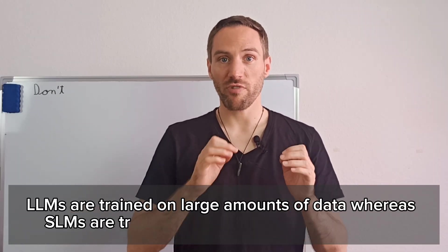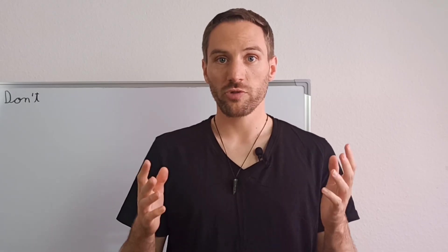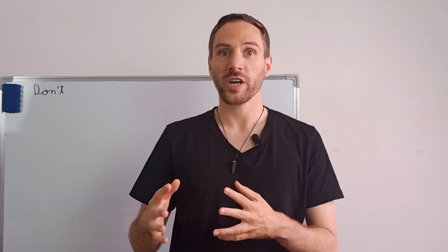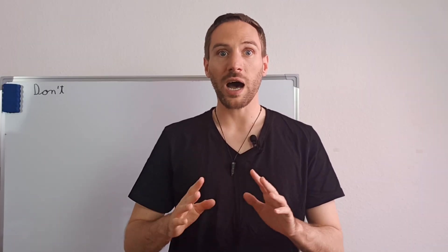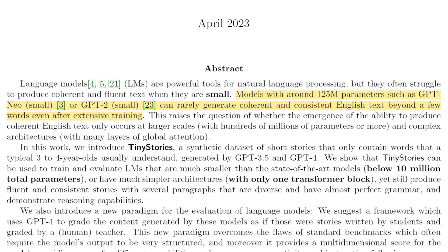SLMs are instead trained on very specific high-quality datasets. One approach Microsoft talks about is how they created tiny stories, a dataset consisting of stories that a three- or four-year-old could understand. They generated multiple different stories out of a pool of 3,000 words. Before this approach, models with around 125 million parameters, such as GPT-neo or GPT-2, can rarely generate coherent and consistent English text beyond a few words, even after extensive training.